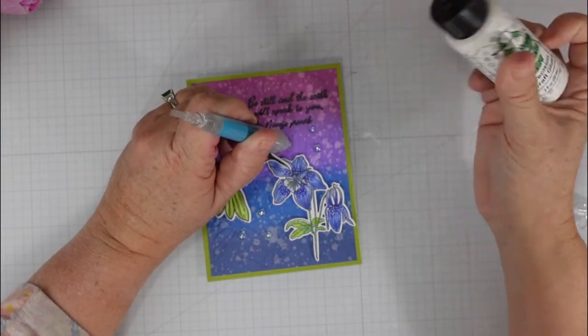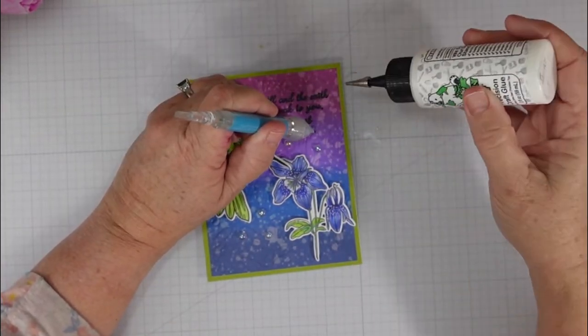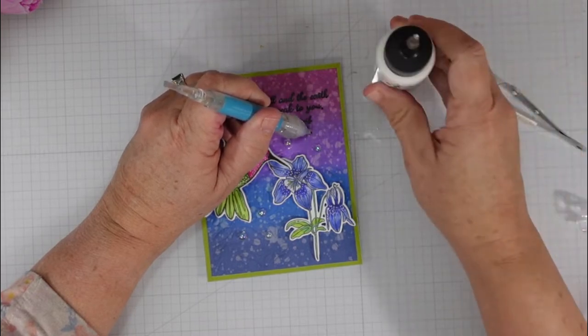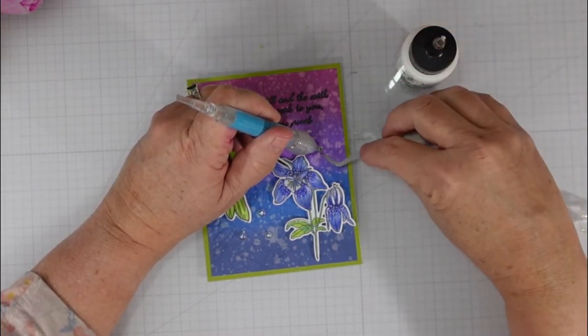I'm going to add some iridescent little jewels that I had in my stash. Three at the top, three at the bottom, and that's going to finish my card for today.